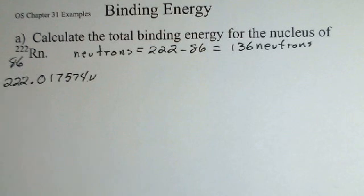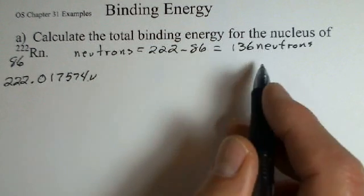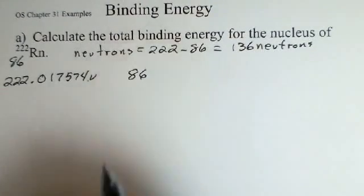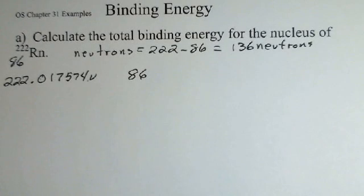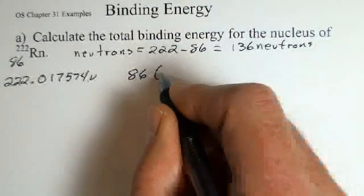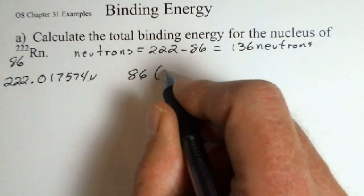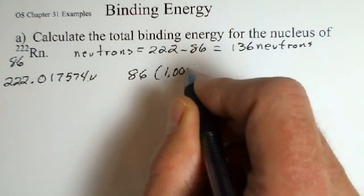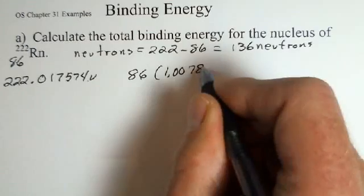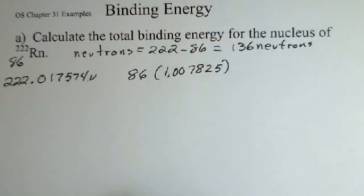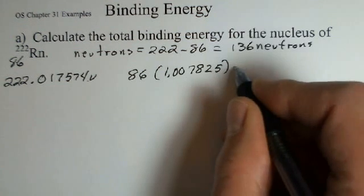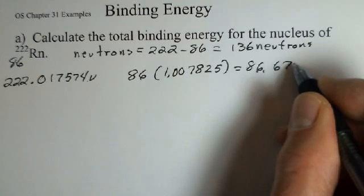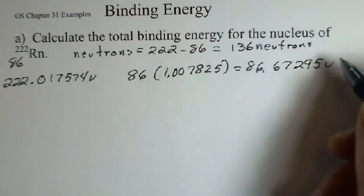What about the protons here? We've got 86 protons. And we'd like to also take into account the 86 electrons. We cannot ignore the electrons here. Again, in a table, you'll find the mass of a neutral hydrogen atom with one proton and one electron: 1.007825, if I've copied that down correctly. You ought to check your own table and see what you get for that. So multiplying that out, I get 86.67295, and that's the atomic mass unit.